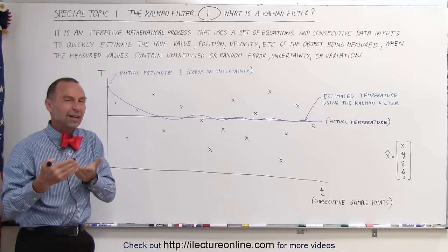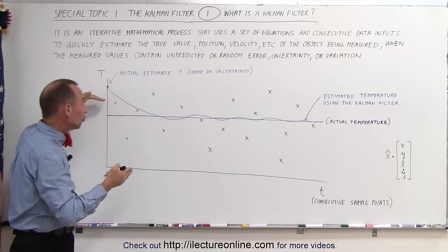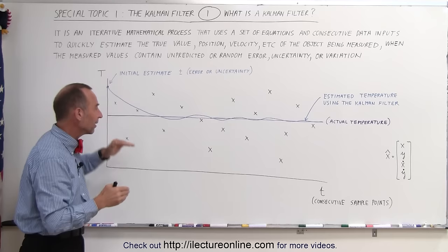But very quickly as data points start coming in and we go through that iterative process, the Kalman filter actually narrows down to somewhere close to the true value very quickly. It doesn't take very many data points to get there and once you get there, as more and more data points come in,